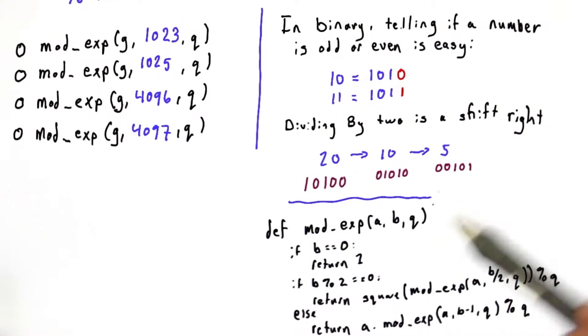In our modular exponentiation routine, if our exponent is even, we divide by 2, and it costs 1 multiplication. And if our exponent is odd, we subtract 1 from it, which will make it even, and then we divide by 2. So if our exponent is odd, it costs 2 multiplications.